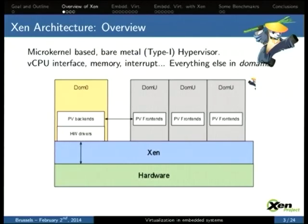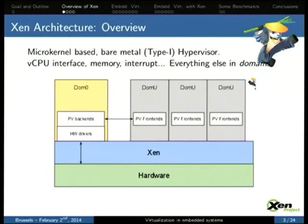Everything that runs on top of Xen we call a domain. There are a multiplicity of domains. One special one is DOM0, which we call the control domain. Since Xen doesn't want to deal with device drivers, someone else has to — and in the Xen architecture, that is DOM0. We provide special capabilities to DOM0 to allow it to run the drivers for the network card, disks, and everything you want on your platform.